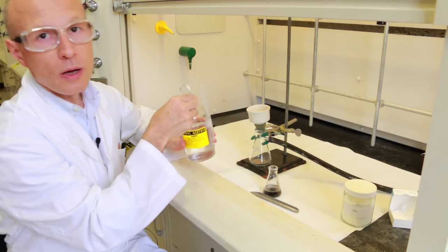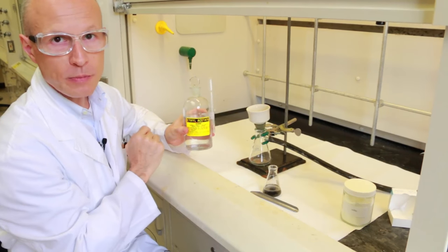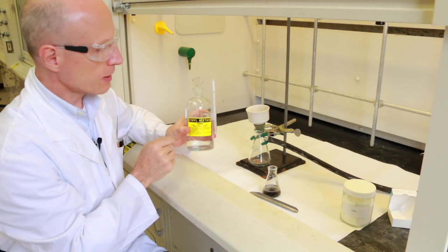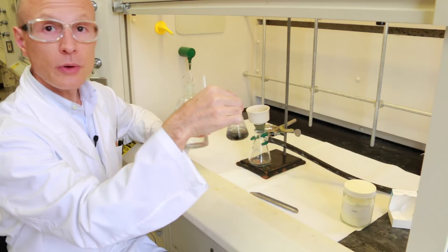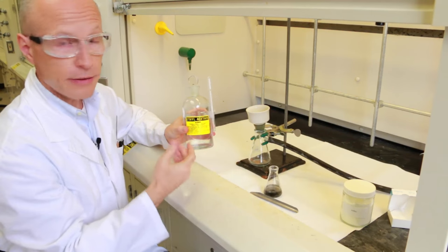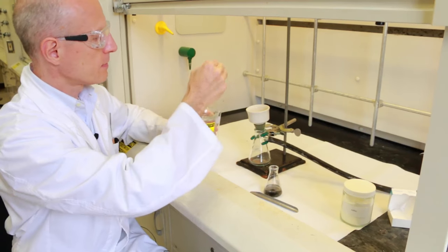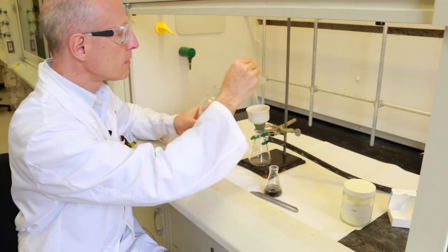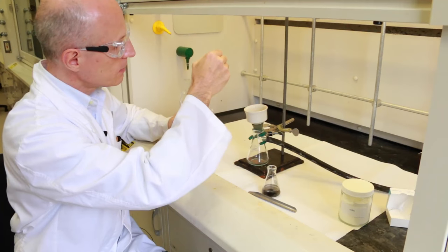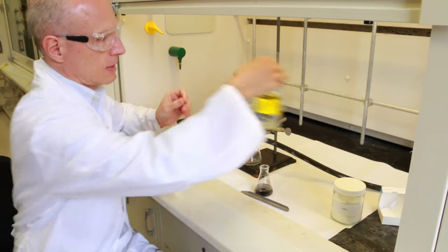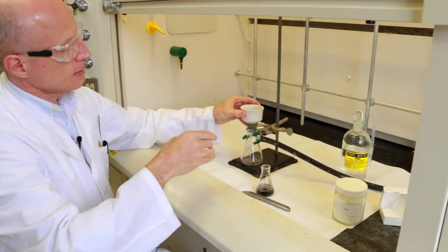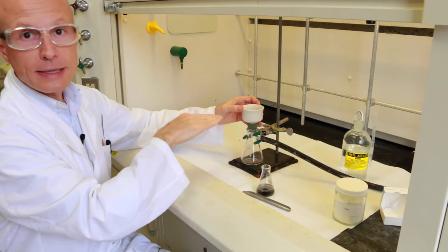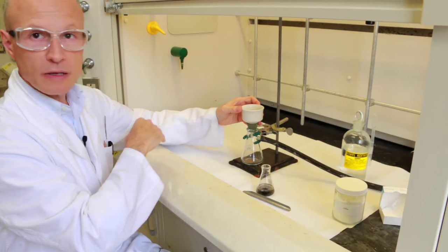As usual, you want to wet the filter paper before you start filtering. You use the same solvent that you have in your solution. In my case it's ethyl acetate, so I will use ethyl acetate. Now your filter is nicely stuck to the bottom of the funnel.